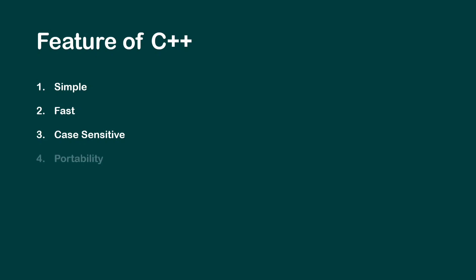Fourth is portability — we can run C++ code on other machines with little or no changes, across other platforms and operating systems. Fifth, C++ is compiler-based. A compiler is a translator that translates source code into machine code.